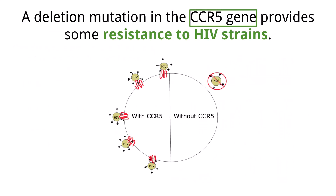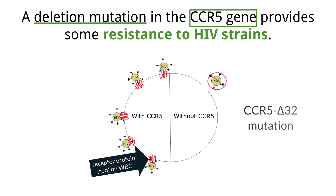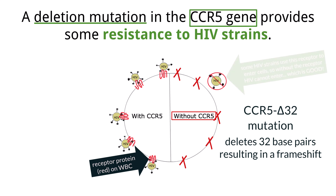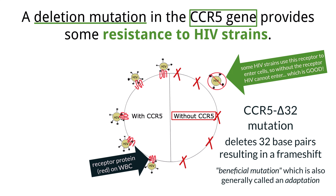The CCR5 gene codes for a receptor protein on the surface of white blood cells. A deletion mutation known as CCR5 delta 32 removes 32 base pairs from this gene, causing a frame shift and producing a shortened, non-functional receptor. People who inherit two copies of the CCR5 delta 32 mutation lack functional CCR5 receptors, which prevents certain strains of the HIV virus from entering cells, giving these individuals a natural resistance to HIV infection. This is a rare example of a beneficial mutation in humans, showing how a deletion can lead to a non-functional protein but, in this case, with a protective effect.